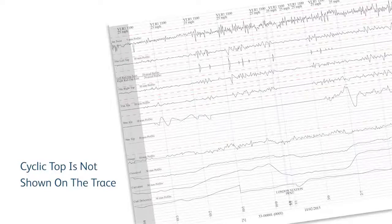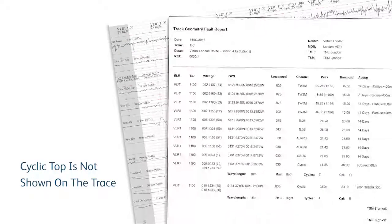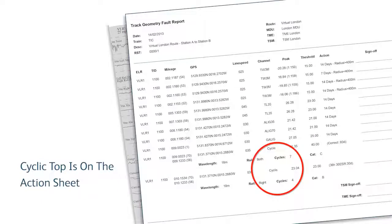Cyclic top faults are not identified on the trace because the TRV software is looking for a pattern, however they are detailed on the action sheet.